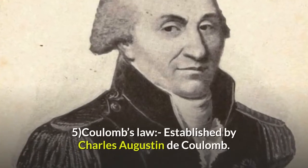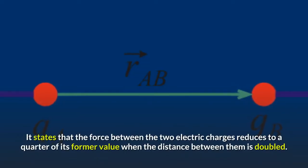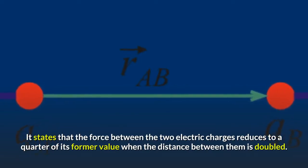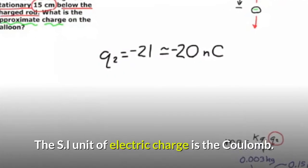Number 5: Coulomb's Law, established by Charles-Augustin de Coulomb. It states that the force between two electric charges reduces to a quarter of its former value when the distance between them is doubled. The SI unit of electric charge is the coulomb.